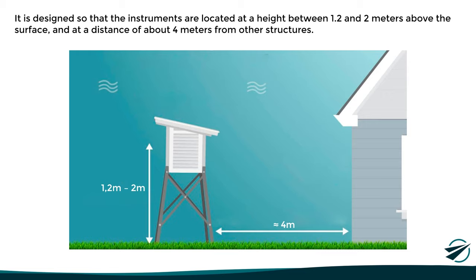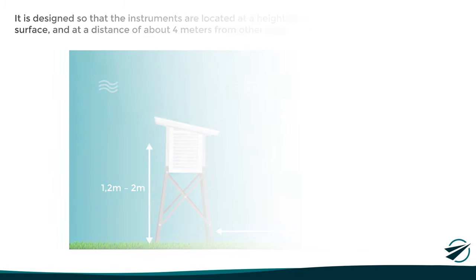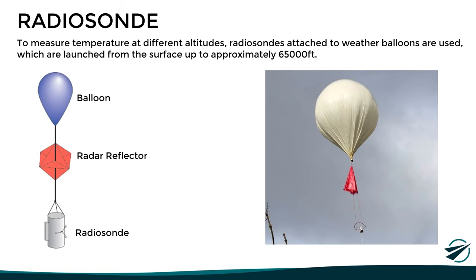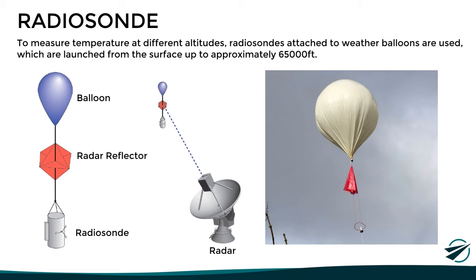This is how air temperature is measured at the surface. But if we want to measure the temperature at different altitudes, radiosondes attached to weather balloons are used, which are launched from the surface up to an altitude of approximately 65,000 feet. These devices consist of a radiosonde containing the different measuring instruments, a radar reflector that allows tracking of its position, and the balloon itself. Most modern models incorporate a GPS antenna instead of radar reflectors for more accurate position tracking.